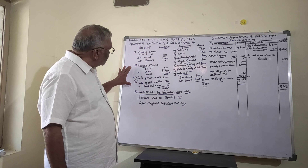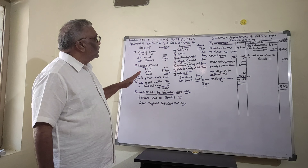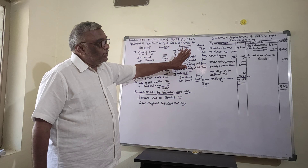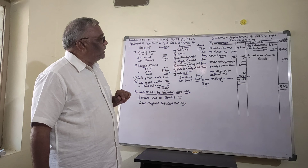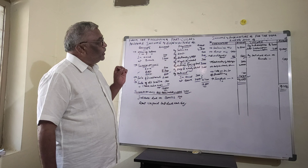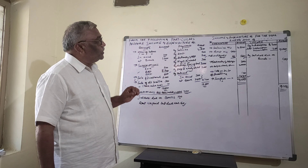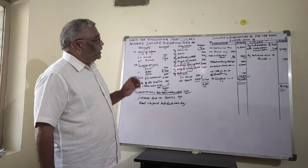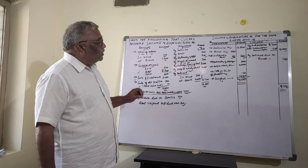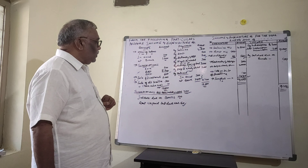On the receipt side, some items are revenue items and some are capital items. Similarly on the payment side, some items are revenue and some are capital. At the time of preparation of the income and expenditure account, we write only revenue items, and only those revenue items that relate to the year 2020. Only the items belonging to that year are entered into the account.